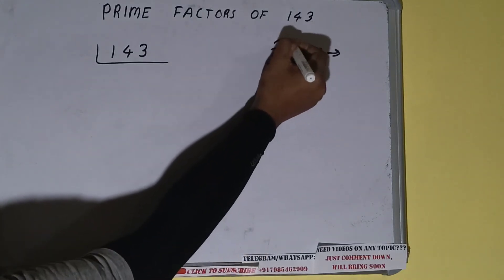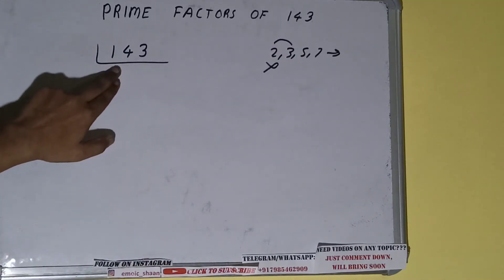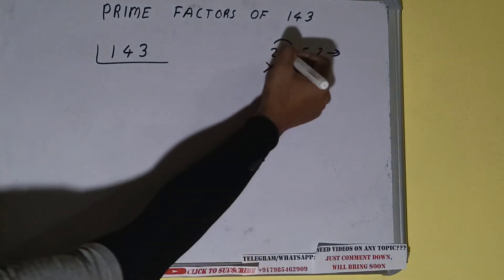So we'll be going to the next lowest prime number, that is 3. Is the number 143 divisible by 3? If we check, 1 plus 4 plus 3 equals 8, not divisible by 3 as well.